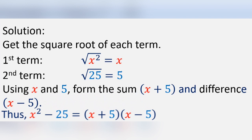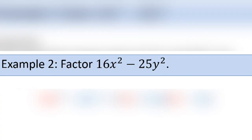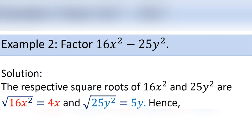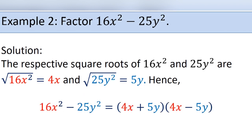Sample number two: factor 16x squared minus 25y squared. The respective square roots of 16x squared and 25y squared are: square root of 16x squared is 4x, and square root of 25y squared is 5y. Hence, the factors of 16x squared minus 25y squared are 4x plus 5y and 4x minus 5y.